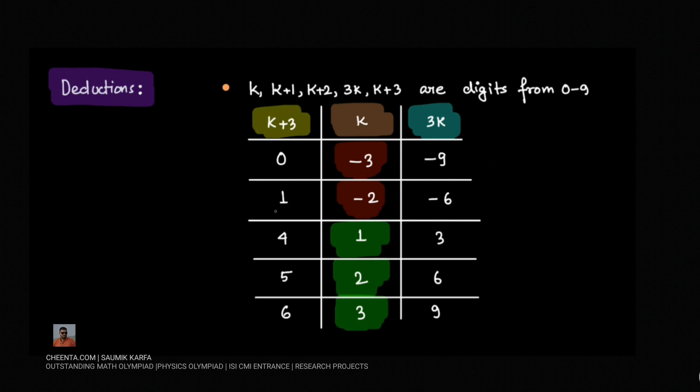If k+3 is 4, then k would be 1 and 3k would be 3, so that's a possible option. If k+3 is 5, then k would be 2 and 3k would be 6, that's another possible option. And if it is 6, then k would be 3, and 3k would be 9, that's also another possible option.